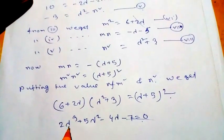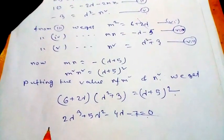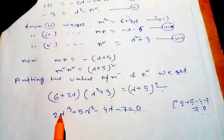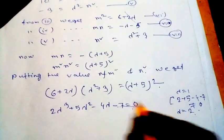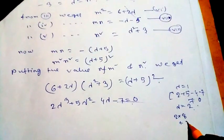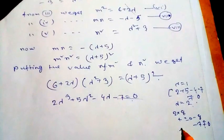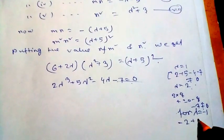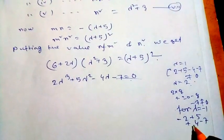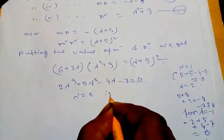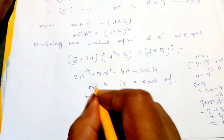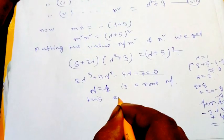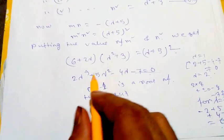Testing λ = 1: 2 + 5 - 4 - 7 ≠ 0. Testing λ = 2: 2(8) + 20 - 8 - 7 ≠ 0. Testing λ = -1: -2 + 5 + 4 - 7 = 0. So λ = -1 is a root of this cubic equation.